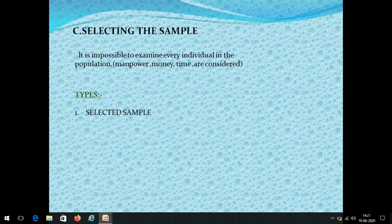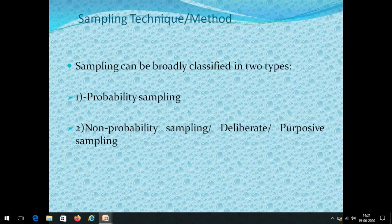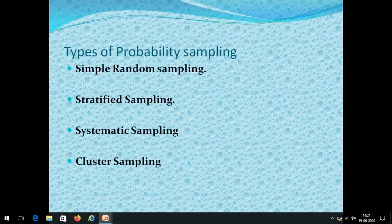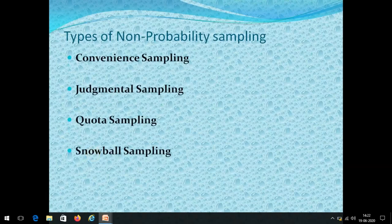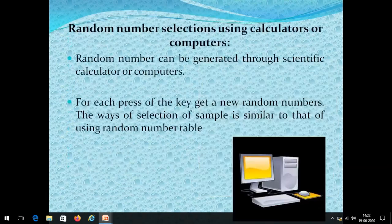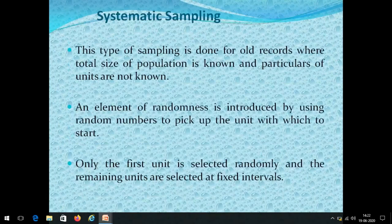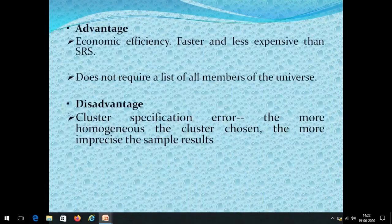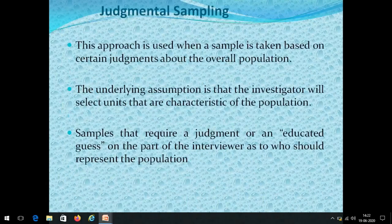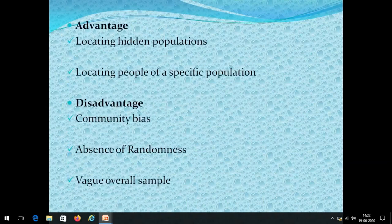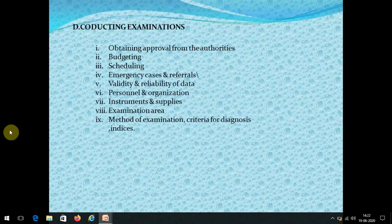For sample selection, we have covered this in detail — probability sampling is preferred because it gives equal chance to all participants, including simple random, stratified, systematic, and cluster sampling. In pathfinder survey, a combined stratified cluster sampling is used. Non-probability methods include convenience, judgmental, quota, and snowball sampling. After sample selection, we conduct the examination, requiring proper approvals from authorities, budgeting, scheduling, and ensuring validity and reliability of data.